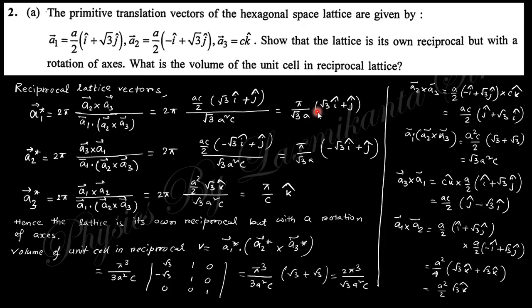So this is the volume in the primitive translational vector. If you put this value, a2 cross a3 will be obtained this one. You can see this is the same type with a rotation - the coefficients of i cap and j cap are interchanged.